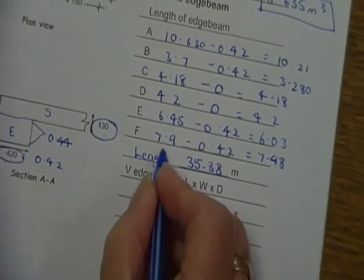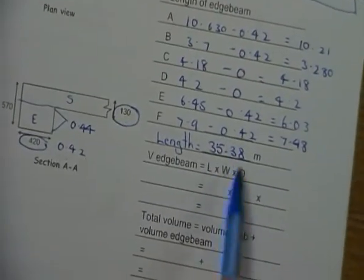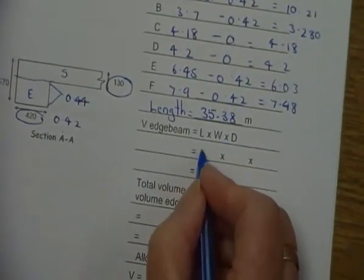You should get an answer of 35.38. Now that is my length of the edge beam, so I like to actually write the word 'length' against that because some people get mixed up and think they've done the volume. It's the length of the edge beam going all the way around.